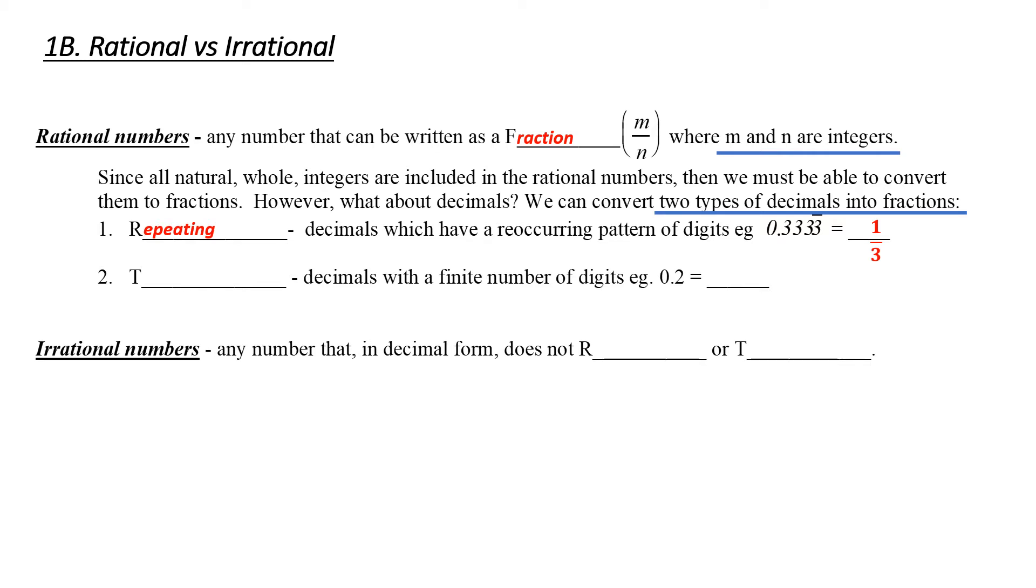The other type of decimal that is a rational number is called the terminating decimal. And that is basically where we have a finite number of digits. So, example 0.2. Notice that 0.2 stops or terminates. So that means we can convert this to a fraction. We look at the last number that we have and ask ourselves, what digit is this in? The 2 is in the 10th place. So I'm going to make it 2 over 10. And of course we always reduce our fractions if possible.